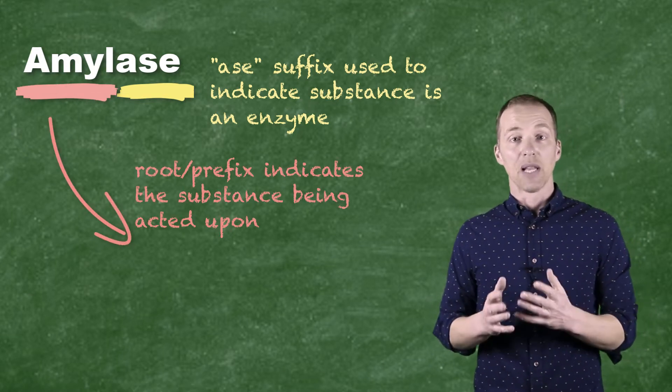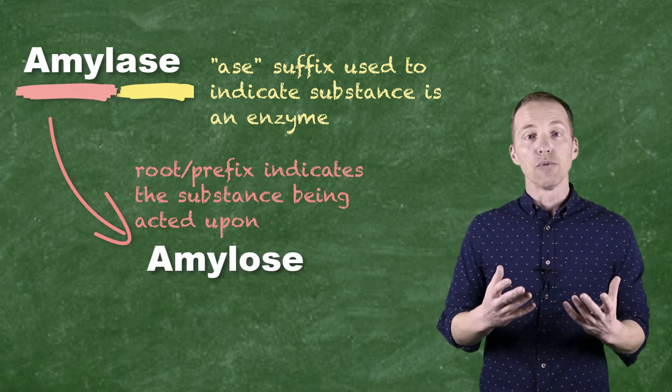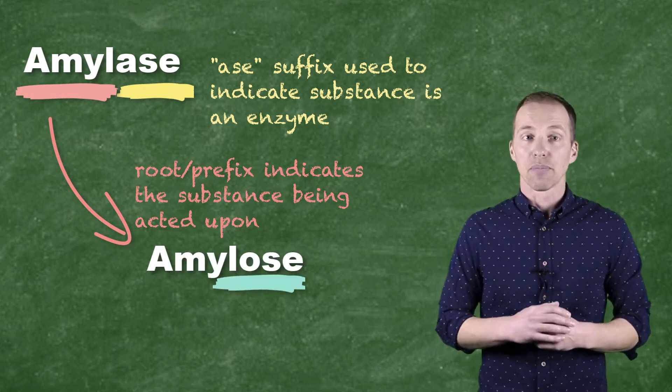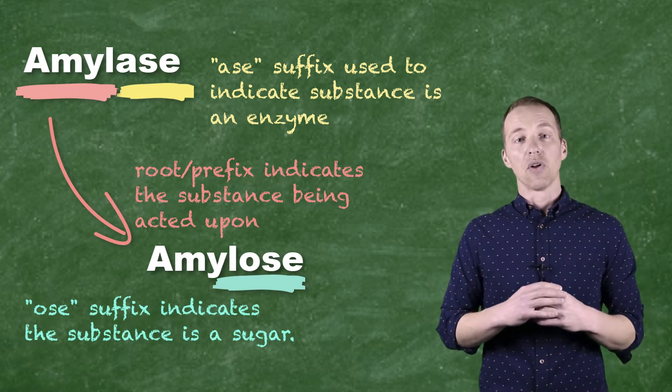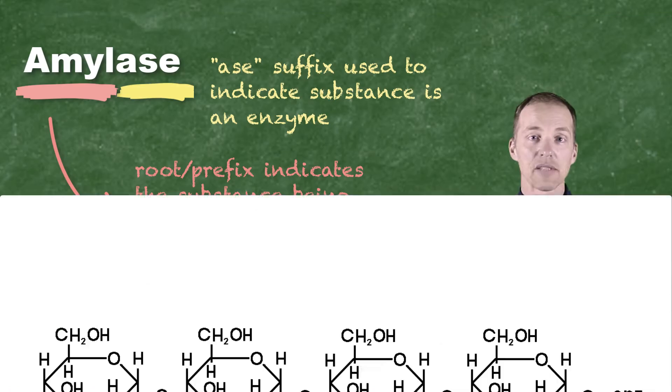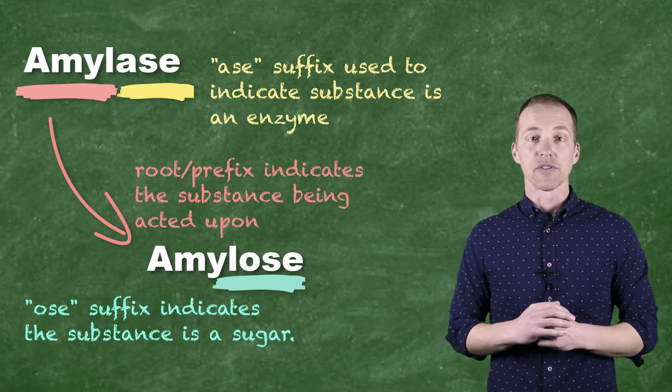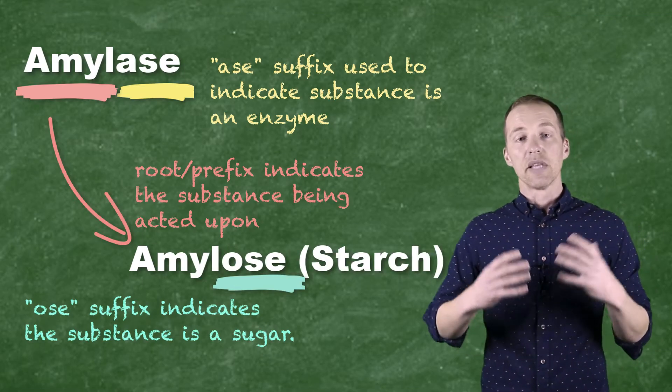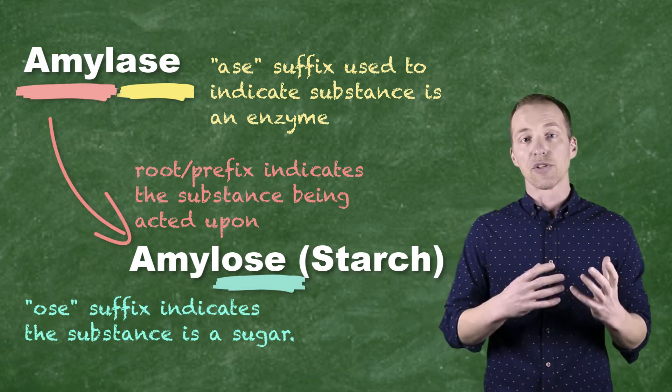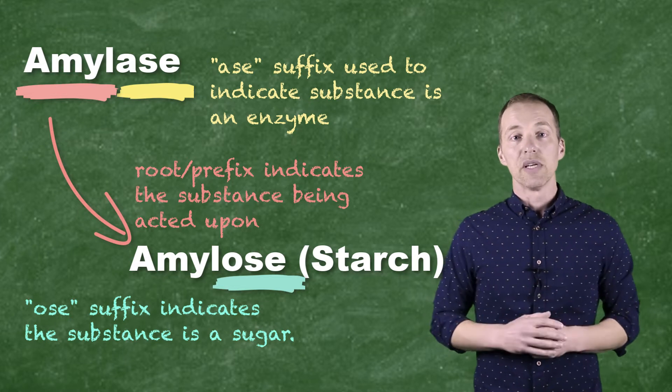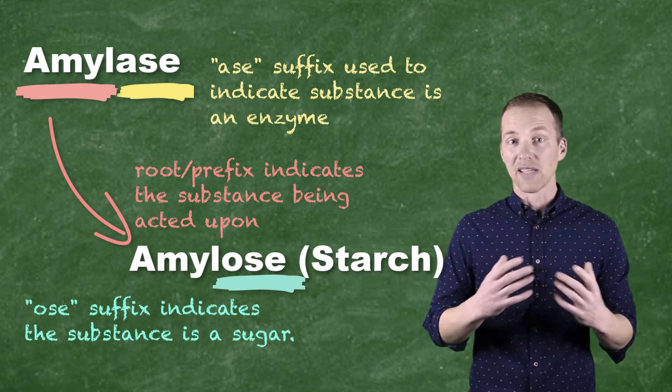So in the case of amylase, it breaks down amylose. And amylose, anytime we see O-S-E, that probably tells us that we're dealing with a sugar. It is a very long carbohydrate chain or polysaccharide that we more commonly call starch. So the amylase is there to begin the breakdown of food chemically by breaking down starch or amylose into simpler sugar units or disaccharides.